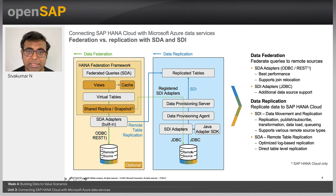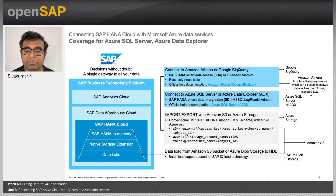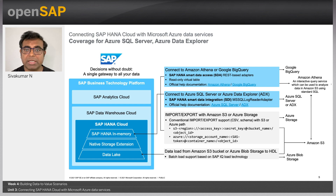You would be able to create a virtual table for the source system in HANA Cloud and fire queries to fetch data from the target system. To connect to Amazon Athena and BigQuery, smart data access is sufficient — no additional agents needed. But for Azure Data Explorer, you need to install the DP agent and the MS SQL log reader adapter. You can also connect to S3 and Azure Storage, and all the setup discussed here applies to both HANA Cloud and Data Warehouse Cloud.